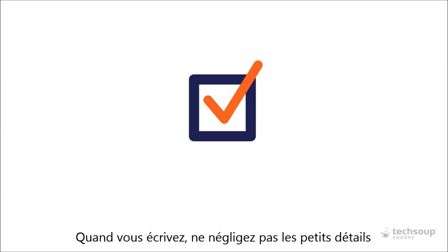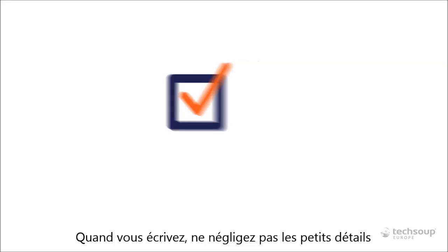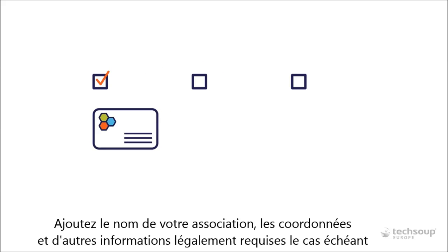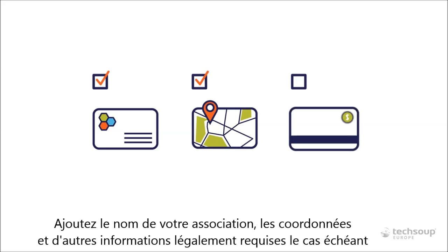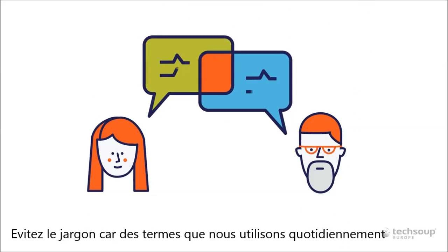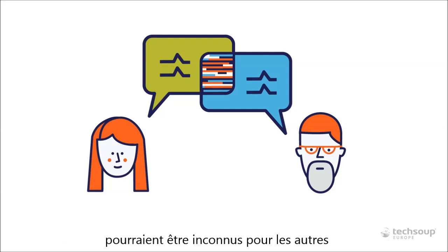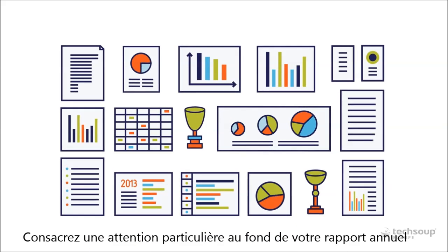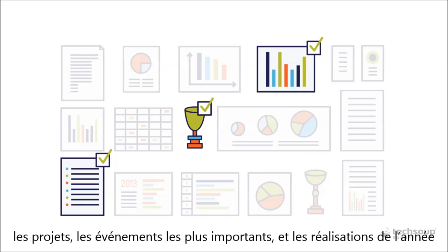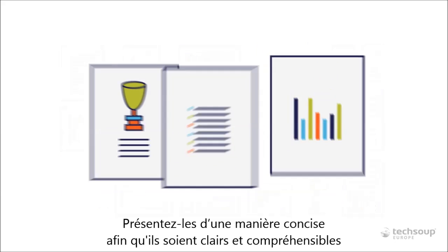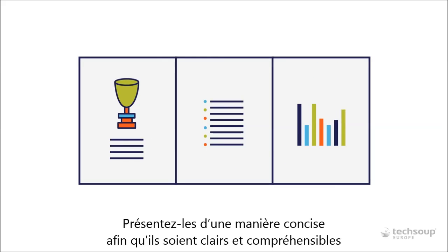This especially applies to children. When writing, don't let trivia slip your mind. Remember your nonprofit's name, contact data, and other legally required information, if applicable. Also be wary of jargon — some of the terms we use every day might be alien to those outside the third sector. Dedicate special attention to the core of your report: projects, most important events, and achievements of the year. Talk about them in a concise manner so that they're understandable and clear.